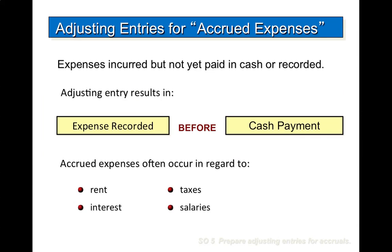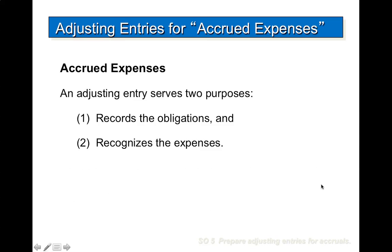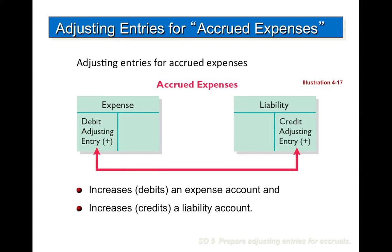Now looking at accrued expenses: expenses are incurred but not yet paid in cash or recorded. The adjusting entry results in an expense being recorded before the cash payment. Some accrued expenses commonly occur for rent, interest, taxes, and salaries. An adjusting entry serves two purposes: it records the obligations and it recognizes the expenses. The adjusting entry for accrued expenses will increase the expense account with a debit and increase the liability account with a credit.